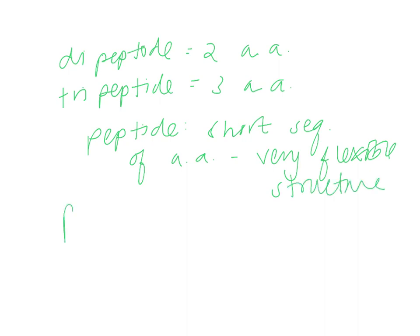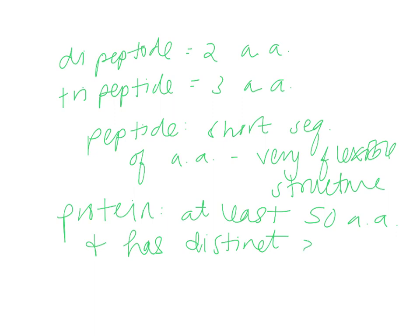A protein is different than a peptide. A protein is at least 50 amino acids in the polymer and it has a distinct three-dimensional structure, a distinct tertiary or quaternary structure.